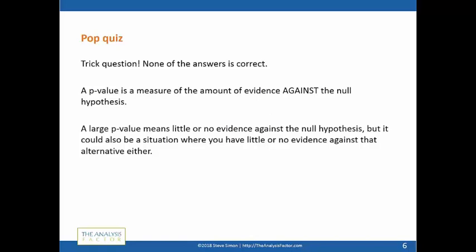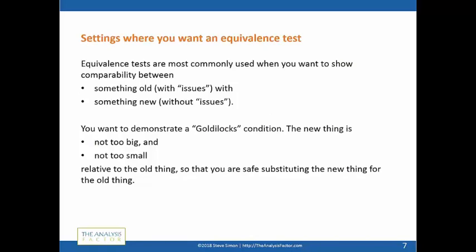A large p-value by itself is not very persuasive. Now, there are times when you want to demonstrate equivalence. You're comparing something old to something new, but there are issues with the old: it costs too much money, it produces too many side effects, it breaks down too easily. You have something new, and you're trying to demonstrate equivalence — but it's something where on a side issue you already know it's superior: it's cheaper, it has fewer side effects, it's more tolerable. You never test equivalence unless there's some extra information about superiority on some other scale.